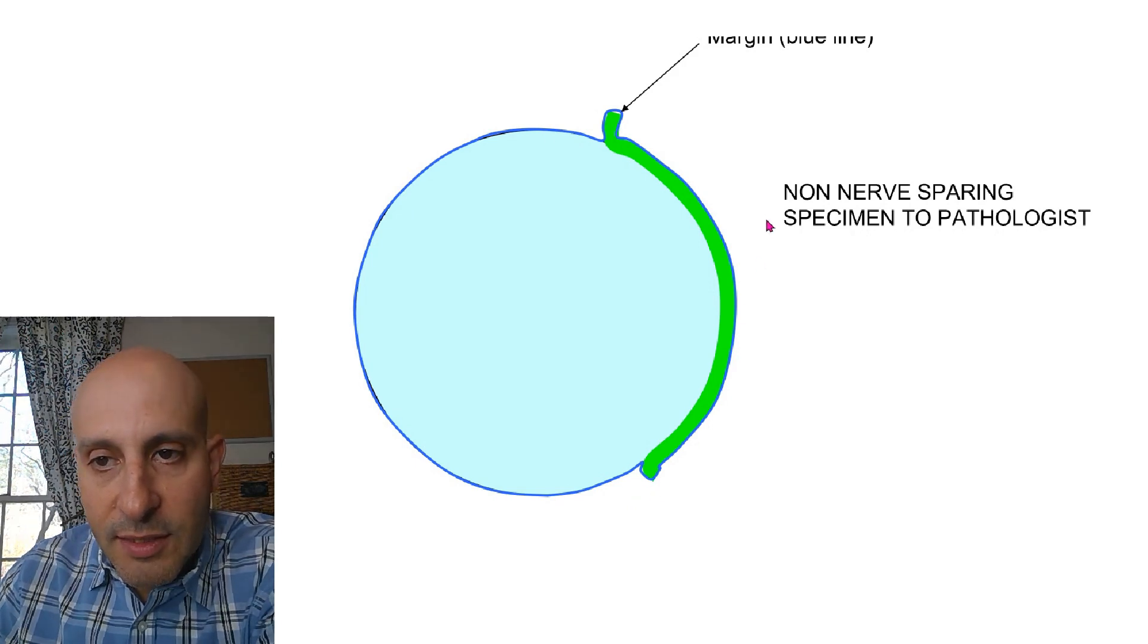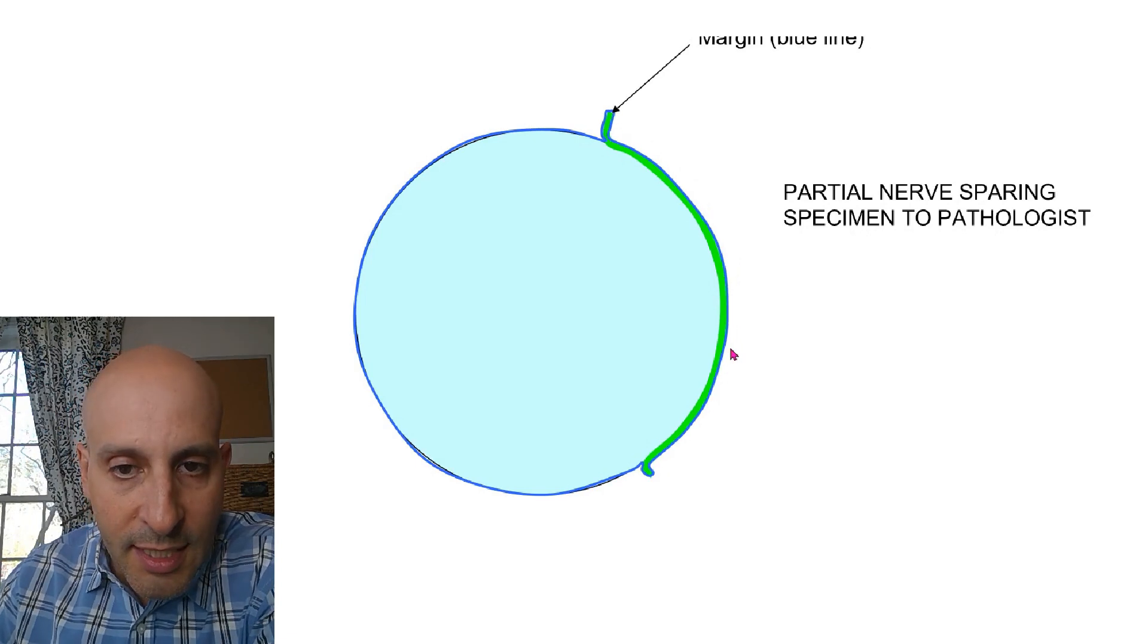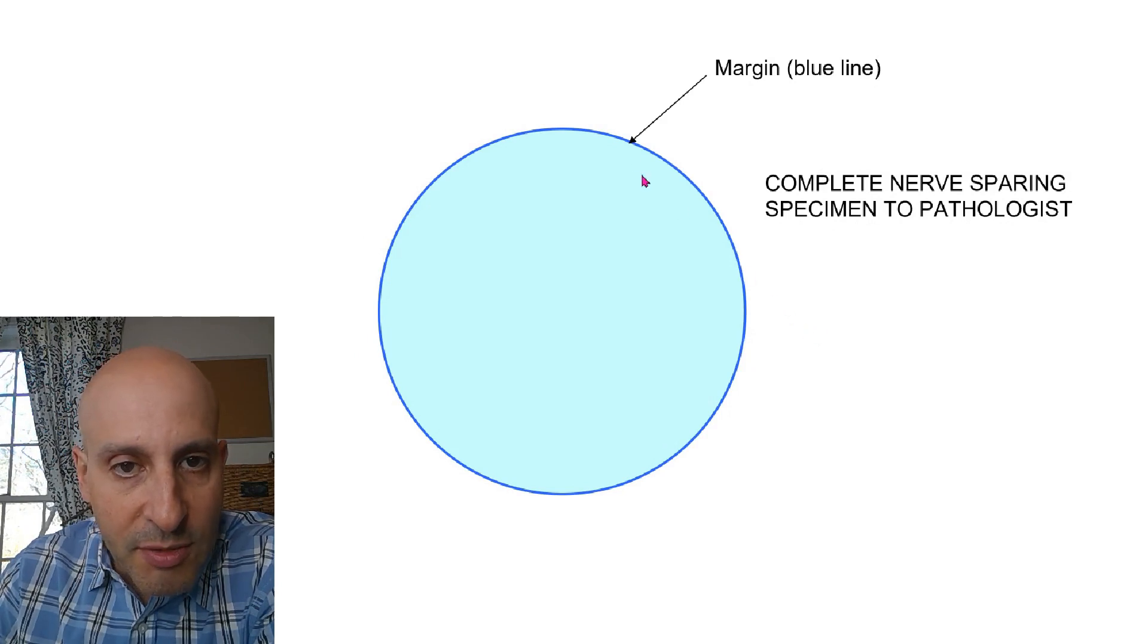So in a non-nerve sparing specimen, that's the outer margin. In a partial nerve sparing, that's the outer margin. In a nerve sparing, that's the outer margin.